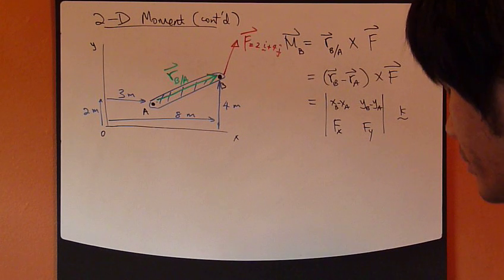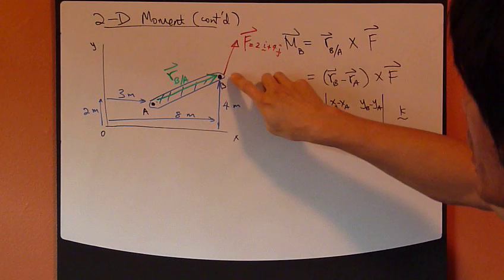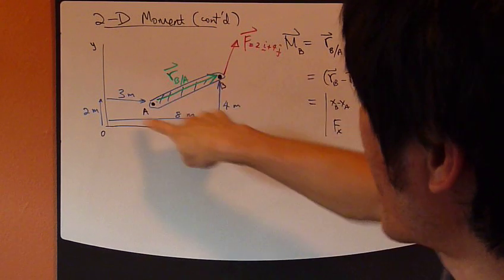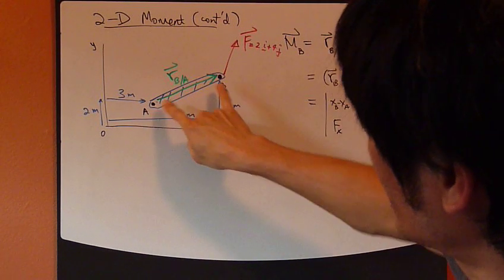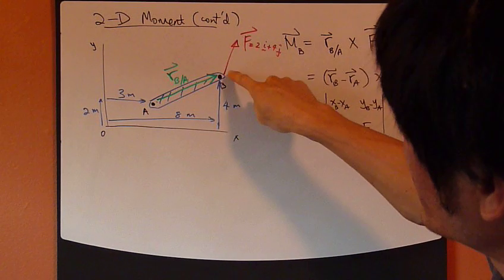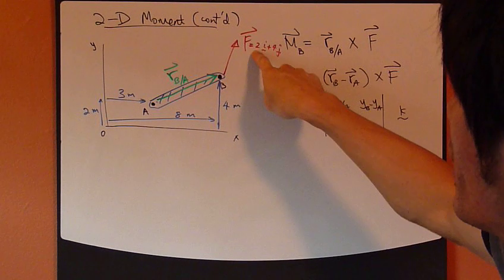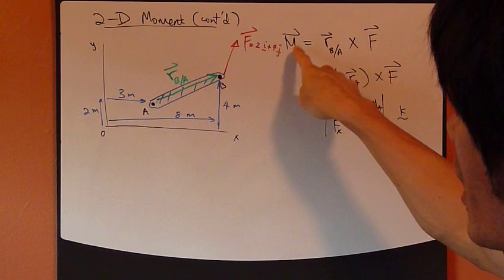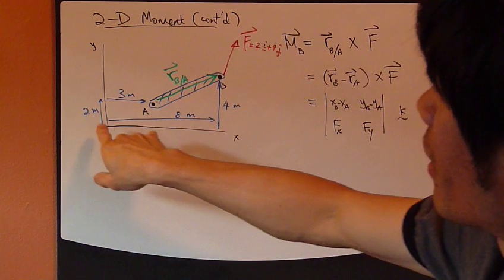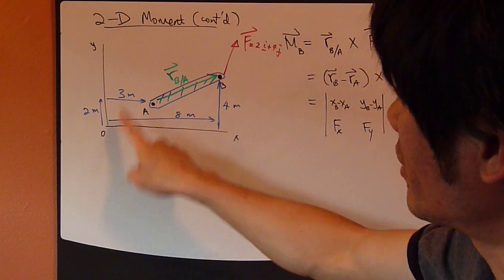So now let's throw some numbers in as a quick example. I have this rigid body from A to point B. I have a force applied at B, 2I plus 4J Newton. You have some dimensions given, point A and point B measured from the origin.